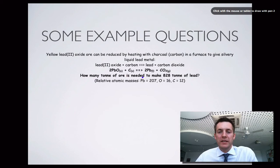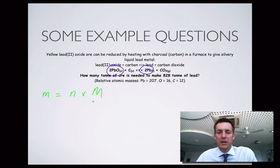How many tons of ore is needed to make 828 tons of lead? Here's the lead. Where's the ore? Yellow lead(II) oxide ore. Lead(II) oxide. There's the ore. How many tons of this? That's a mass calculation, right? So the mass of ore equals the number of moles times its molar mass. I know this formula.